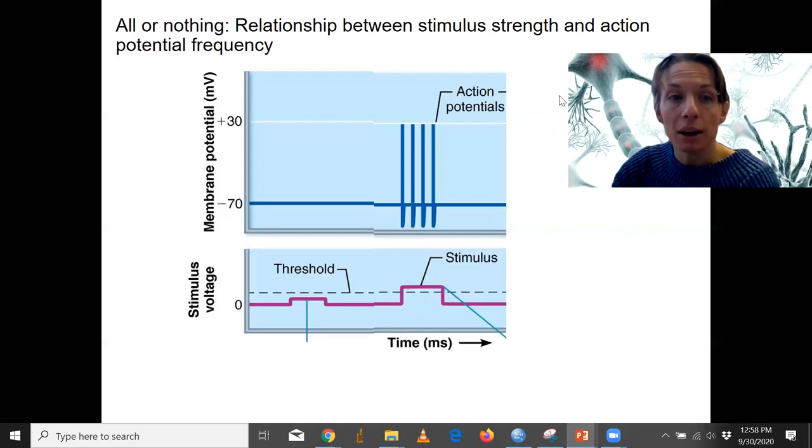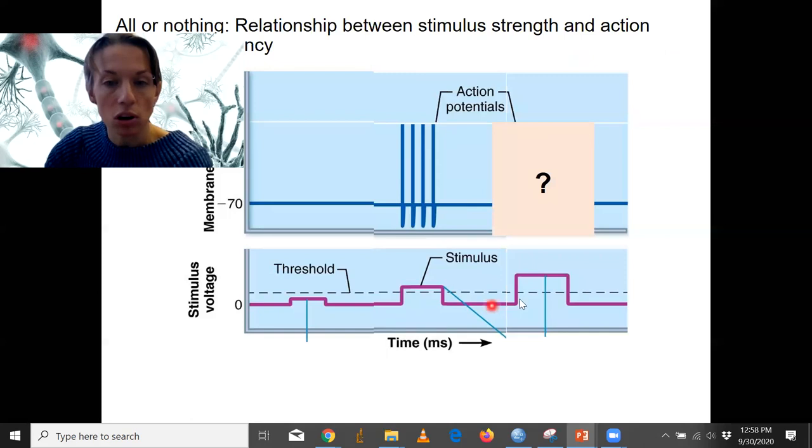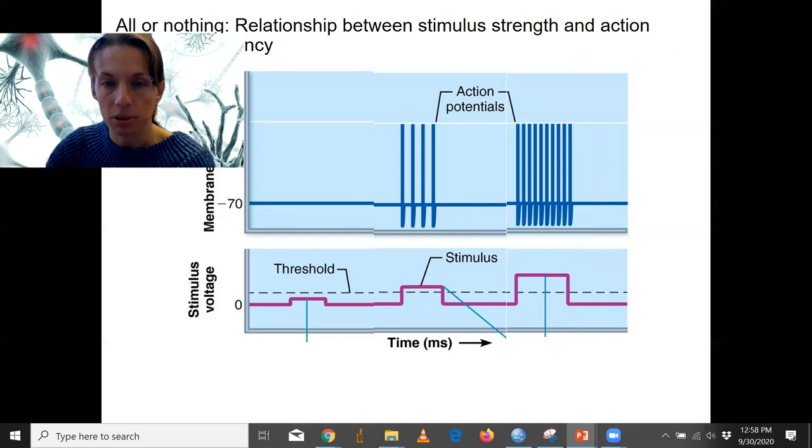Now let's look at what happens if we have a stronger stimulus, a stronger depolarization for our stimulus. Are we going to have larger spikes? No. We will have more spikes, so more action potentials will be able to be fired, and that's depicted like this.